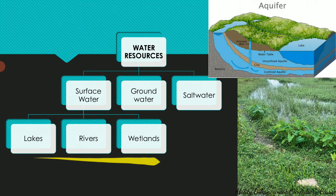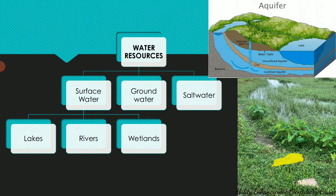Surface water can be further divided as rivers, lakes, and wetlands. Lakes are still or stagnant water, called the lentic ecosystem. The lotic ecosystem refers to rivers — the flowing water. Wetlands mainly include mangroves, marshes, and swamps. All of these are considered as the surface water type.